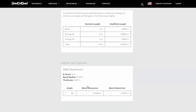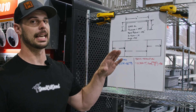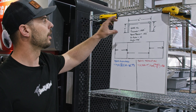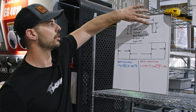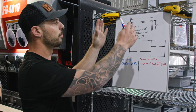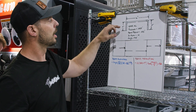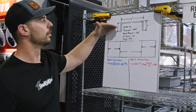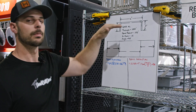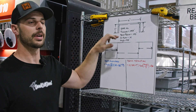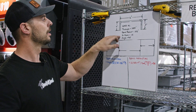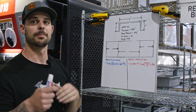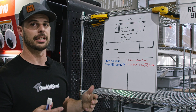Let's look at what this calculator is actually doing in the background with an example. We want a flange that is two inches tall by six inches wide by two inches tall — so we have two bends. We're going to make it out of 5052 aluminum, 80 thousandths thick, with a bend radius of an eighth of an inch (0.125 inches), a k-factor of 0.4, and an angle of 90 degrees.